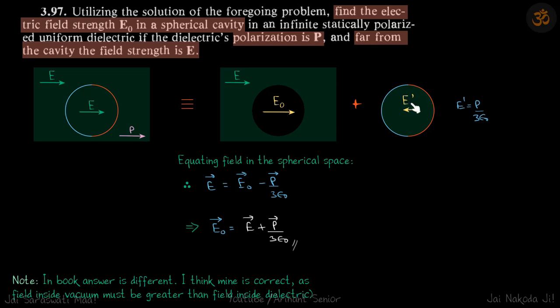So let's call it E prime, and we have seen it in the previous problem that the value of this E prime is P by 3 epsilon naught. So if a dielectric has a constant given polarization P, then the value of electric field is P by 3 epsilon naught, which is a constant electric field inside the dielectric.